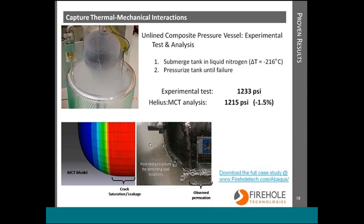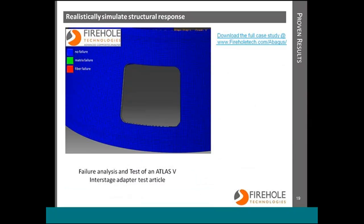The next example is a large composite space structure, an interstage adapter. It has carbon epoxy face sheets and an aluminum honeycomb core, and this structure was about the size of a Volkswagen Bug. The loading here is a linear scaling of the worst-case flight conditions. Prior to the test, Helios MCT was used to analyze the failure test of this interstage adapter.